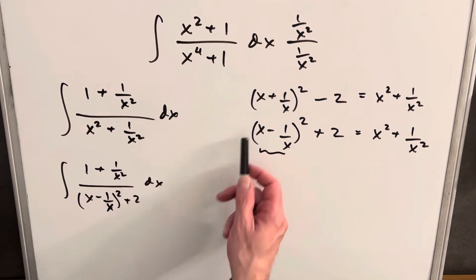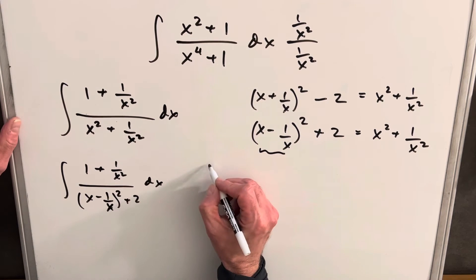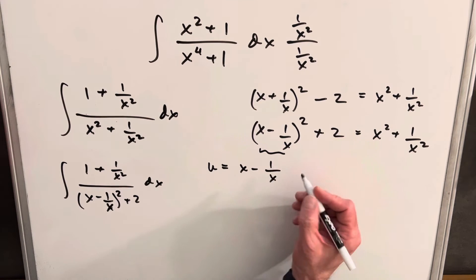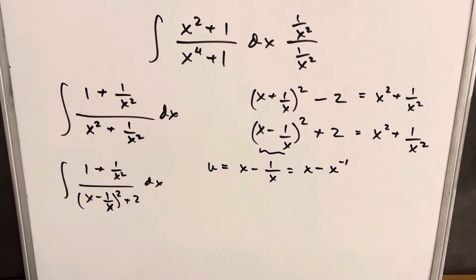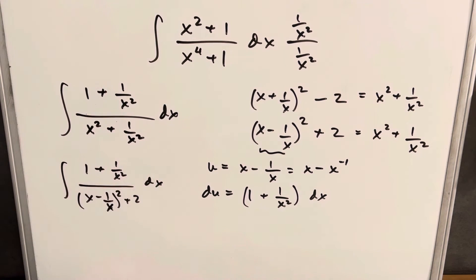So just having rewritten this using our second equation, we have our integral in this form. Let's look at our u substitution. I want to make my u equal to x minus 1 over x, and just to be clear, this is the same thing as x minus x to the negative 1. Then I'll take my derivative. Derivative of x is 1, derivative here is going to be a plus 1 over x squared, or x to the minus 2. You can see that's going to work out perfectly because we have our du right here in the numerator.